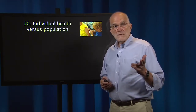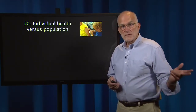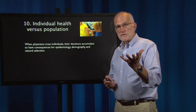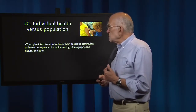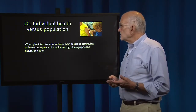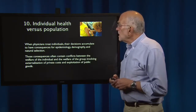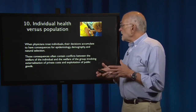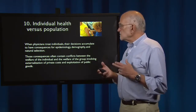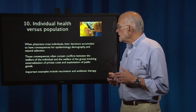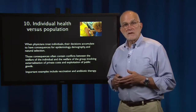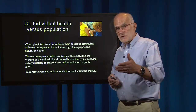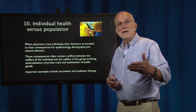In Chapter 10, we discuss individual health versus population benefit. There are conflicts that arise between individuals and populations. When physicians treat individuals, their decisions accumulate to have consequences for epidemiology, demography, and even natural selection. Those consequences often contain conflicts between the welfare of the individual and the welfare of the group, involving externalization of private costs and exploitation of public goods. Important examples include vaccination and antibiotic therapy.